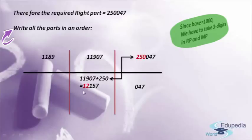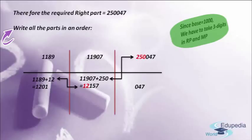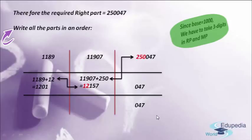Since 12157 is a 5-digit number and we should have only 3 digits, we take the last 3 digits, 157, as our answer and send the remaining 12 as carry-on to the left part, adding to it. By adding 1189 plus 12, we get 1201. In the left part we can have as many digits as we want. So in the right part we have 047, in the middle part we have 157, and in the left part we have 1201.